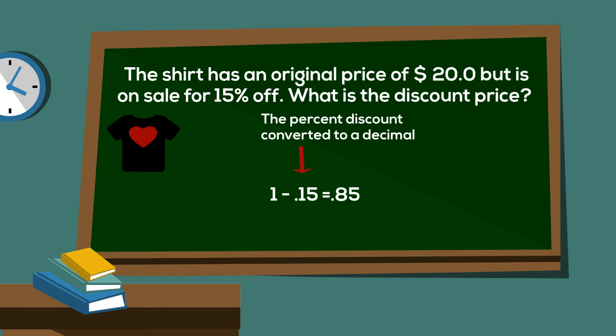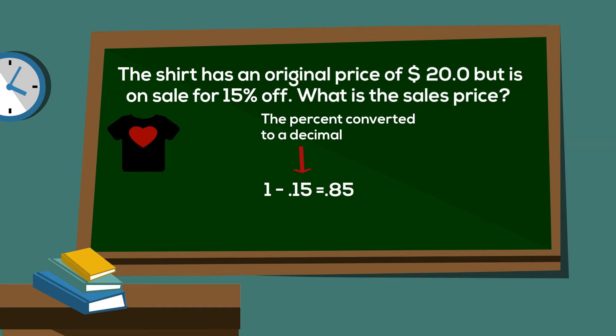First, take 1 minus 0.15, which is 15% converted to a decimal, and that equals 0.85. Then take 20 times 0.85, and that equals $17.